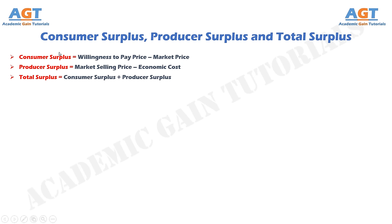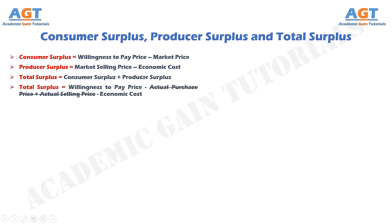Note that in the equations for consumer surplus and producer surplus, the price paid is a common term to both. Since price paid is a positive term in producer surplus and a negative term in consumer surplus, the price paid cancels out, resulting in the following equation for total surplus: total surplus equals willingness-to-pay price minus economic cost.